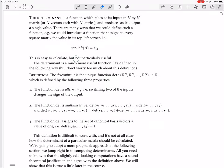This is easy to calculate but not particularly useful. The determinant is a much more useful function. It's defined in the following way, but don't worry too much about this definition. The determinant is a unique function from n copies of R^n.